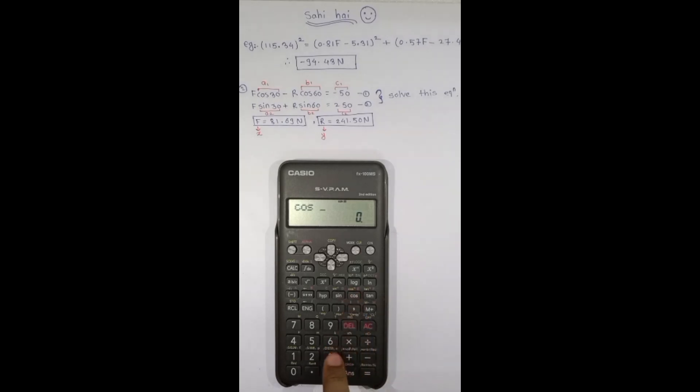Here a1 is cos 30 equals to, b1 is minus cos 60 equals to, c1 is minus 50. For equation 2, here a2 is sin 30 equals to, b2 is sin 60 equals to, c2 is 250 equals to. Here we get x and y.